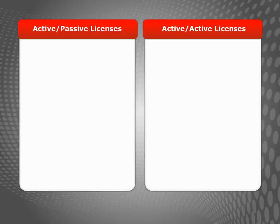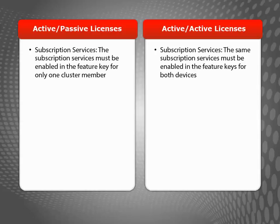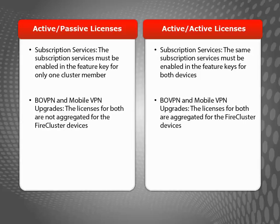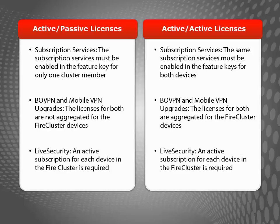Each device in a FireCluster must have its own feature key. When you enable a FireCluster, the subscription services, VPN licenses, and upgrades activated for cluster members operate in a specific way based on your FireCluster configuration. In an active-passive FireCluster, only one XTM device is active at a time, so that device uses the subscription services active for either cluster member. For an active-active cluster, both devices must have active licenses for the same set of subscription services, such as Web Blocker, Application Control, Gateway Antivirus, and so forth.